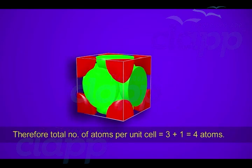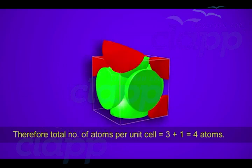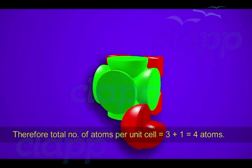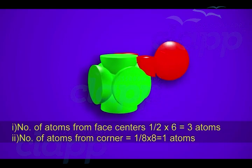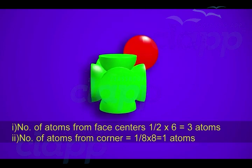Therefore, the total number of atoms in a face-centered cubic unit cell is 4. That is, 3 atoms from the face centers and 1 atom from the corners.